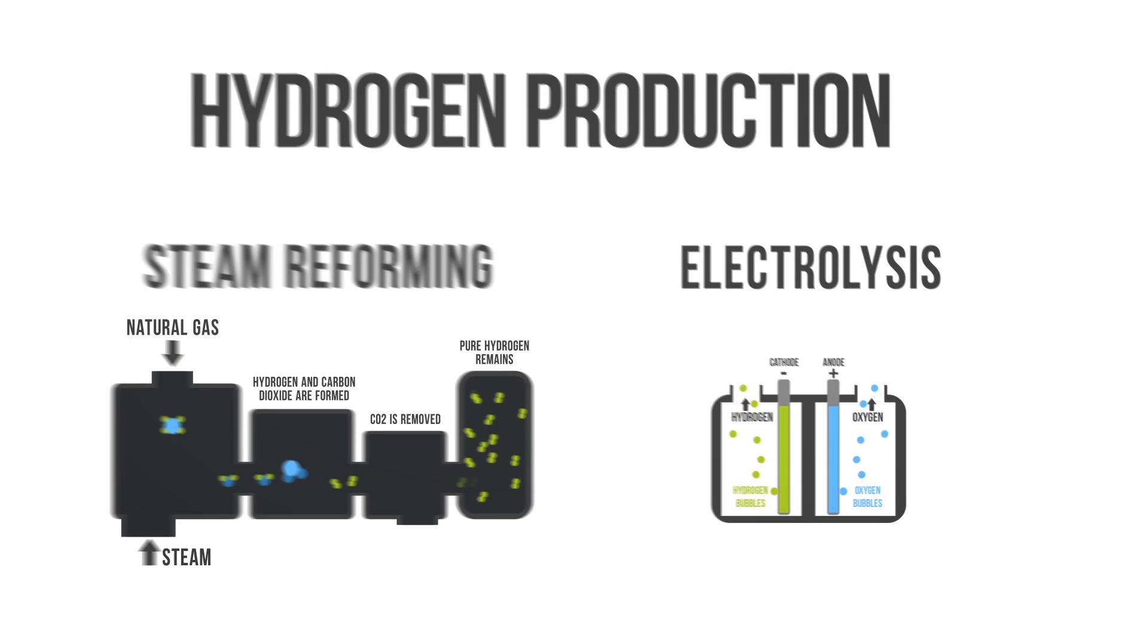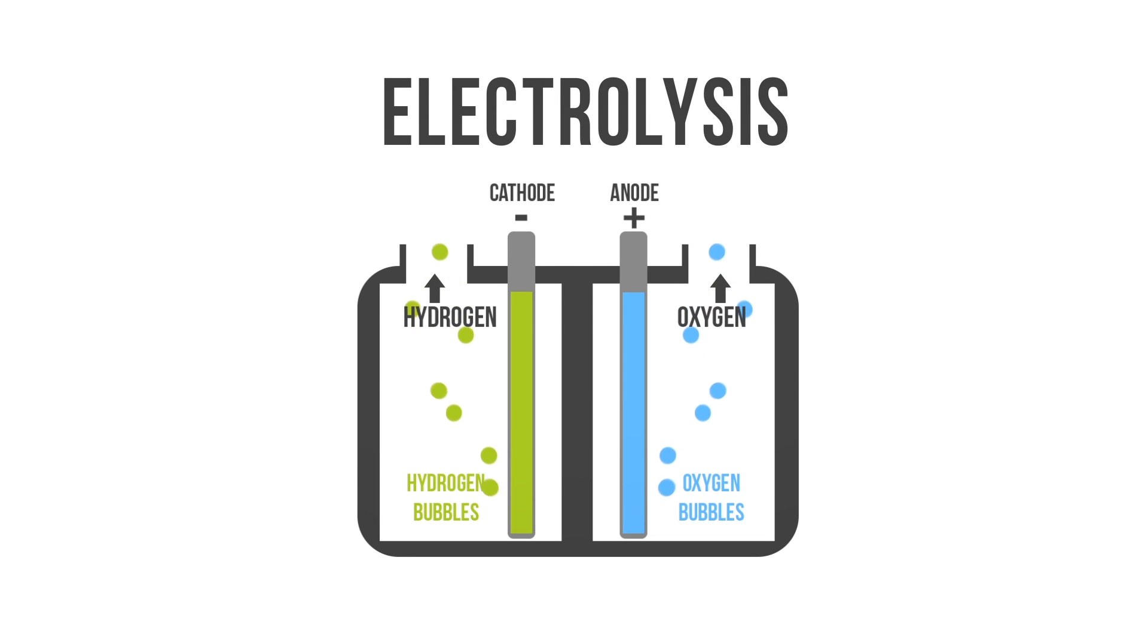Electrolysis is a process that splits water into its basic elements, hydrogen and oxygen, using an electric current. The electricity used in the process may come from hydrocarbons or renewables.